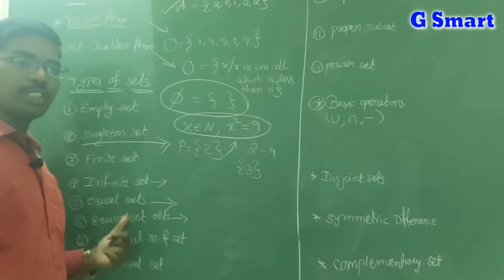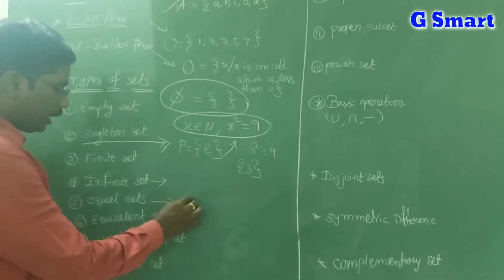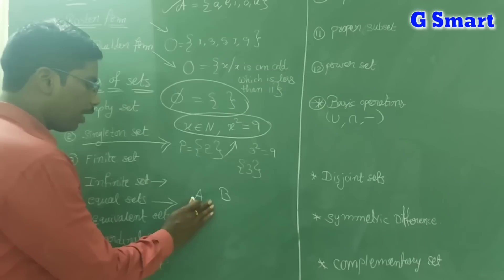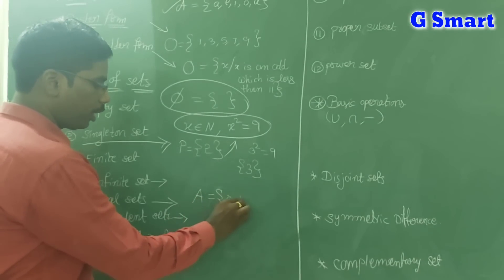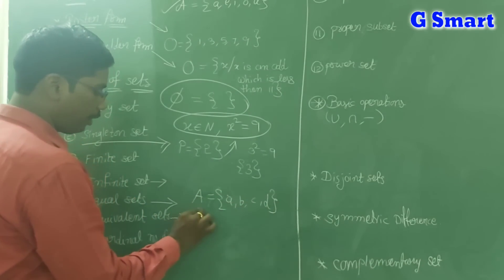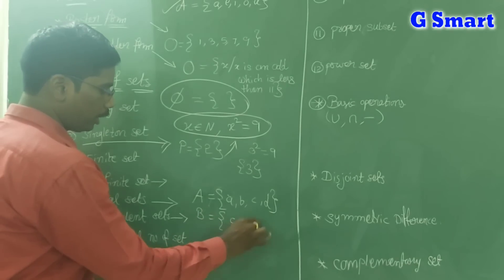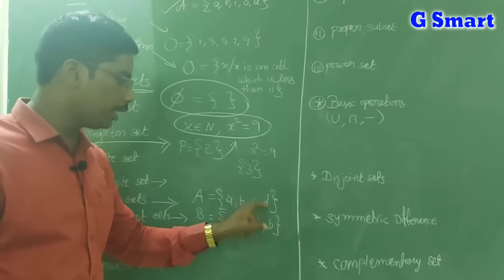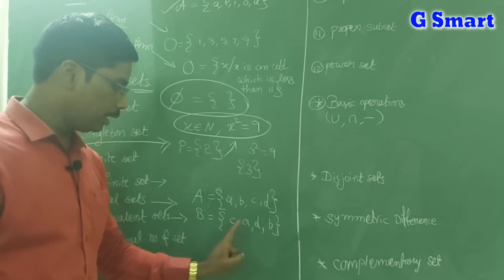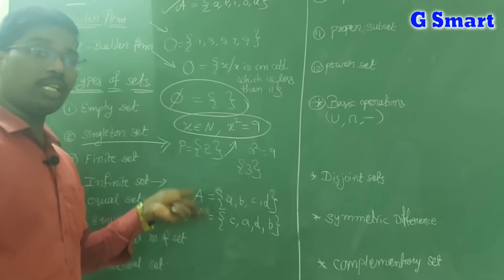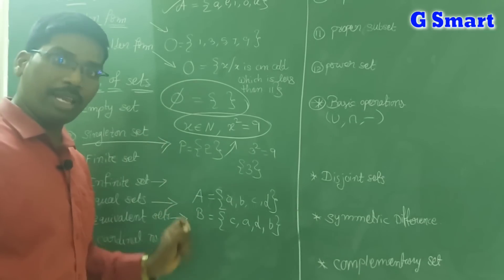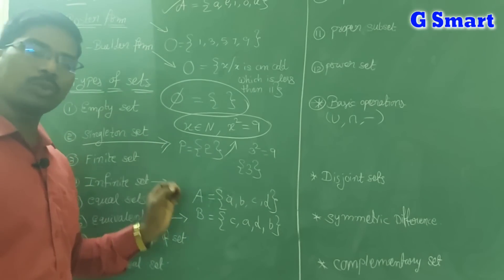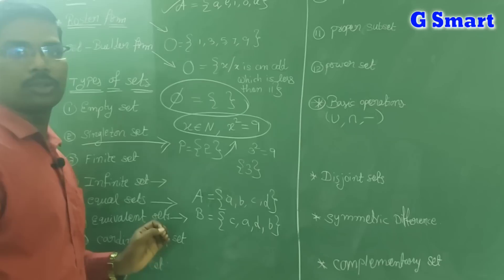Next, equal sets and equivalent sets — these two are very important. Equal sets: if A and B are non-empty sets and A = {a, b, c, d} and B = {c, a, d, b}, these two are equal sets. Two sets are said to be equal sets if they have the same elements and the same number of elements. Order does not matter; if both sets contain the same elements, they are equal sets.